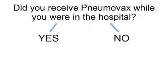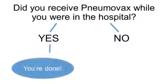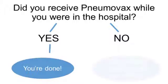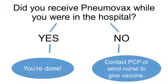Another method is to engage patients. You can call a patient after discharge and ask them whether they received their pneumovax while in the hospital. If the patient says yes, you're done. If the patient says no, that's an opportunity to mitigate — either contact a primary care provider or have a nurse go to the patient's home to administer the vaccine.